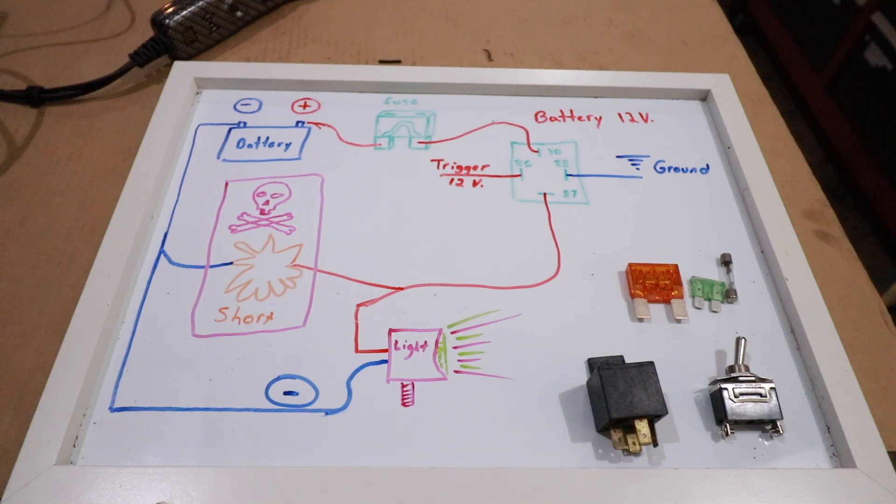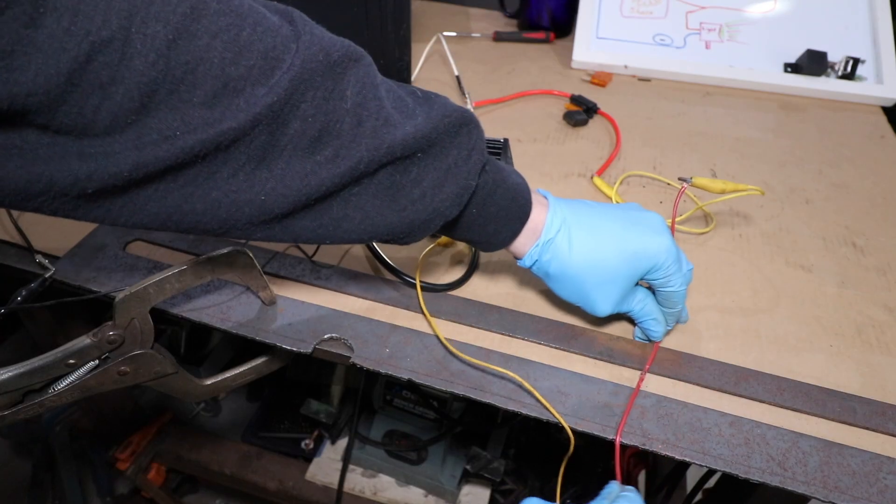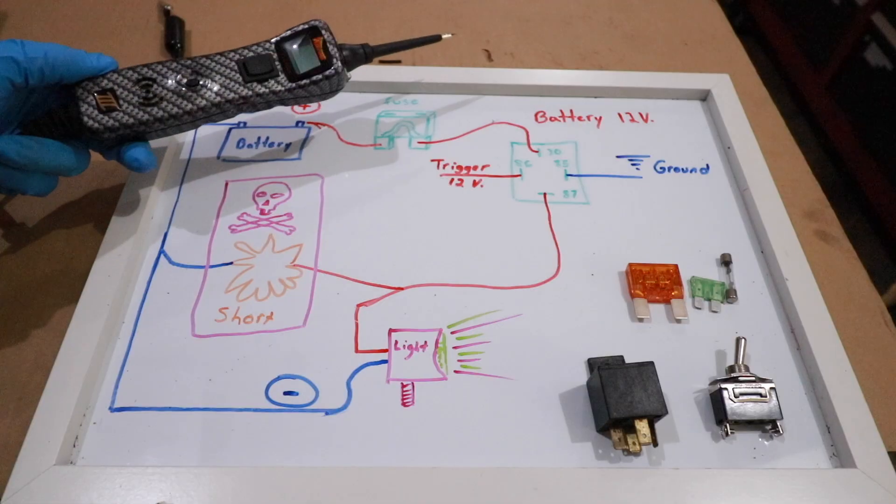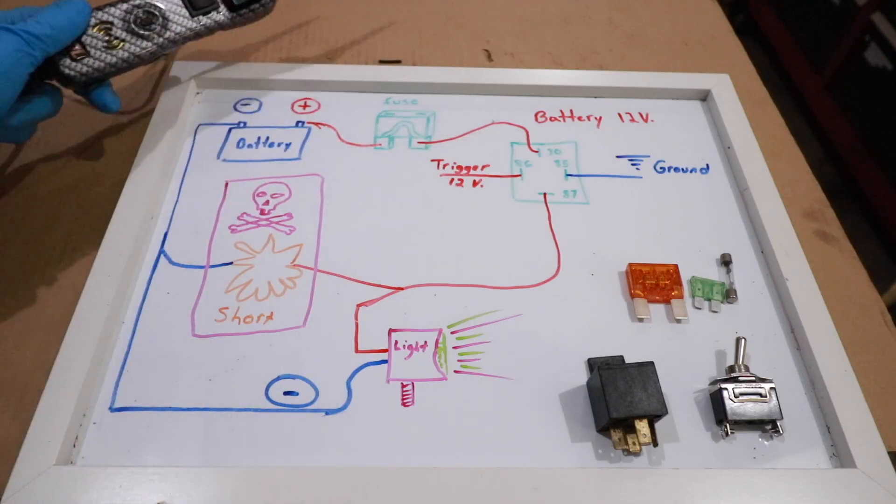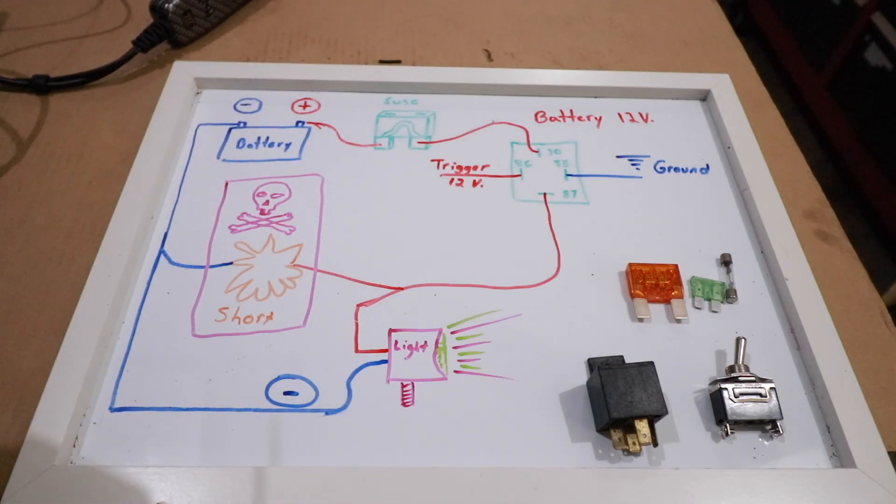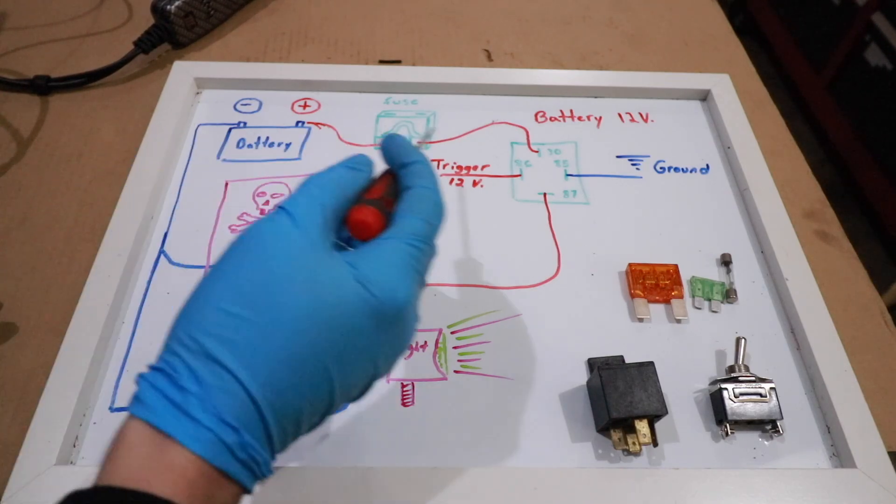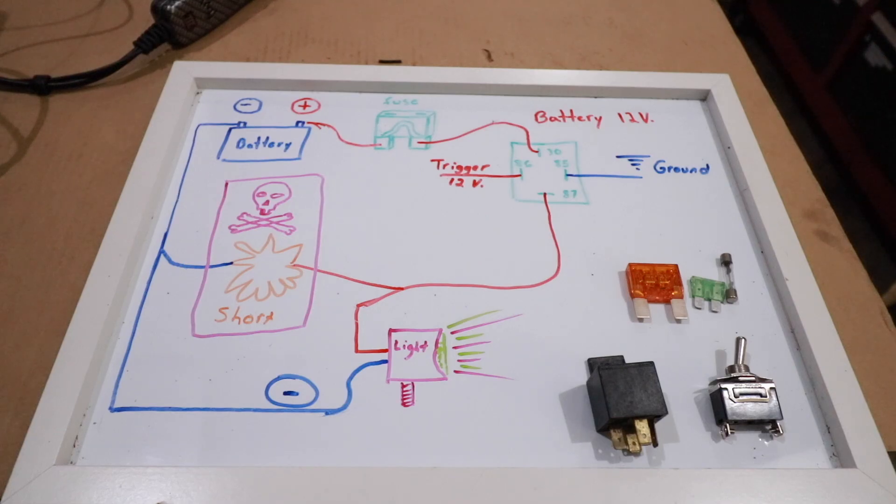Welcome back to the Old Soul Millennial channel. In today's video, I'd like to show you how to find a short circuit with a power probe. Before I show you how to utilize the power probe to track down a short circuit, we need to go over the basics of a common 12-volt circuit that you would find on a normal car or truck.